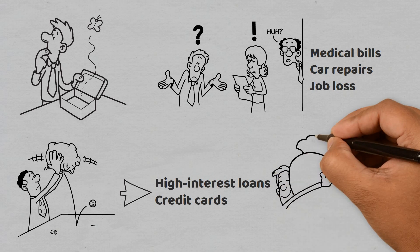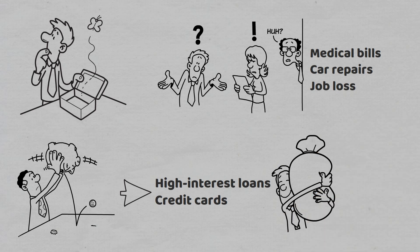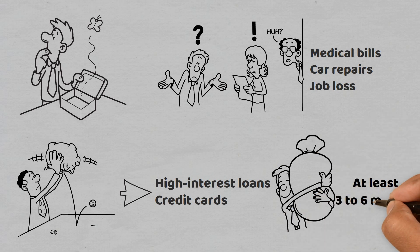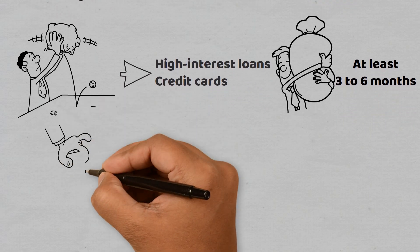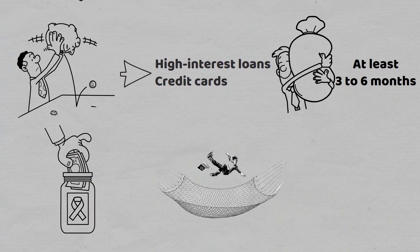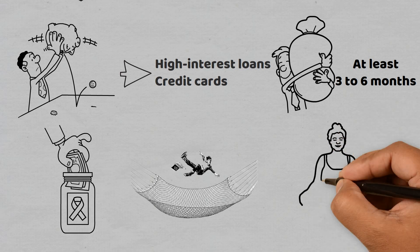To sidestep this pitfall, it's essential to establish an emergency fund that covers at least three to six months' worth of living expenses. Consistently setting aside a portion of your income into this fund can provide a financial safety net, offering peace of mind and a solid foundation for weathering life's unexpected storms.